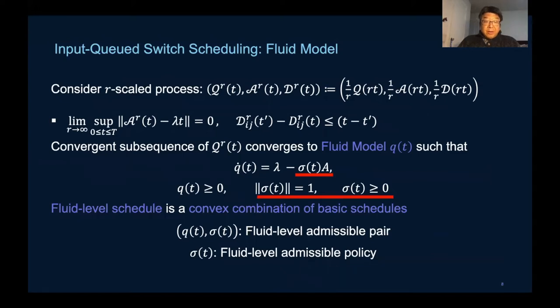Turning to the fluid model, we scale the space and the time by an integer R. By our assumptions and the functional law of large numbers, we have the tightness of the scaled queueing process, the arrival and the decision processes.